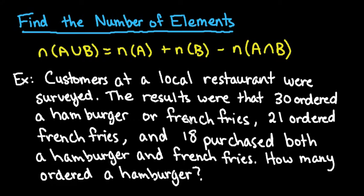Hi, for this video what we're going to do is use the formula to find the number of elements. The formula, remember, is read as the number in set A or B is equal to the number just in A plus the number just in B minus the number that is in both.